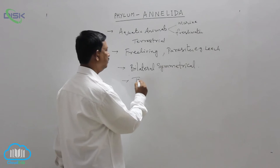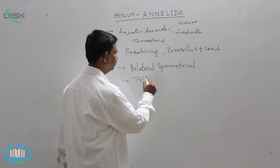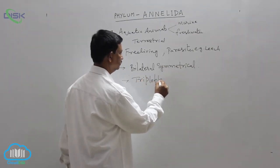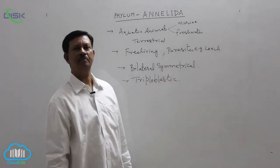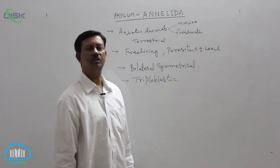They are triploblastic animals. This is the presence of three primary germ layers: ectoderm, endoderm, and mesoderm.